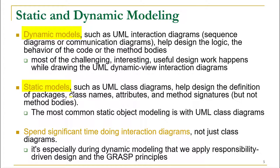There are two different types of models in UML. The first is dynamic models, which include sequence diagrams and communication diagrams. They represent interaction and help you design the logic and behavior — the method bodies. The second type is static models, which include class diagrams. Class diagrams help you design the definition of packages, class names, attributes, and method signatures, but not the method bodies. For the body of a method, you take that information from the interaction diagrams.